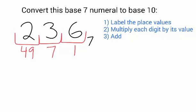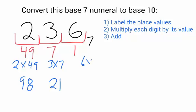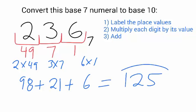For this one, we'll use the same place values like the previous problems. That 2 is in the 49's column, so it's worth 98. The 3 is in the 7's column, so it's worth 21. And the 6 is in the ones column, so it's worth 6. I add up those values, and that gives me 125, and that's the answer.